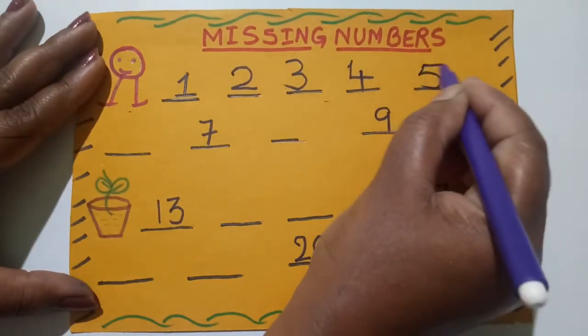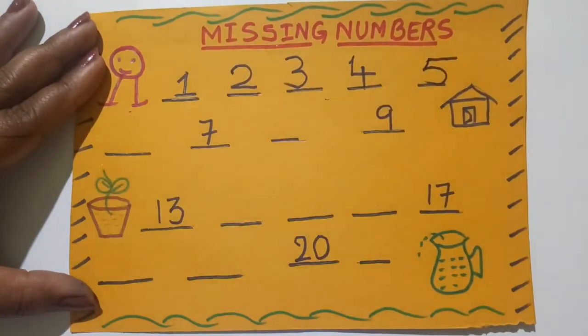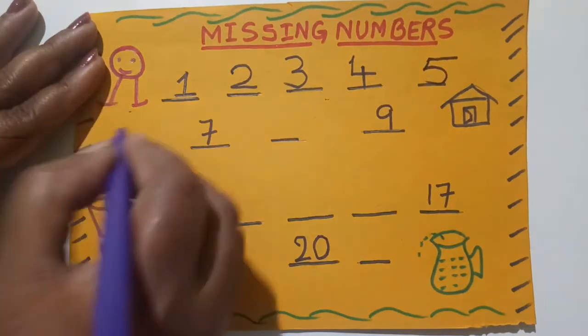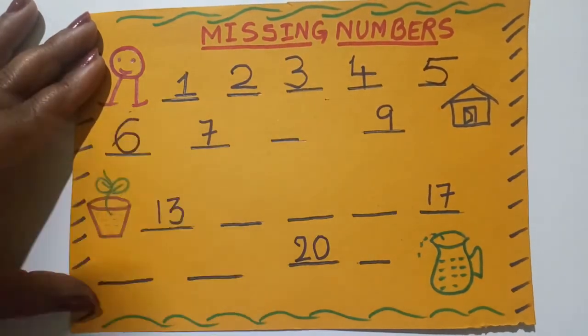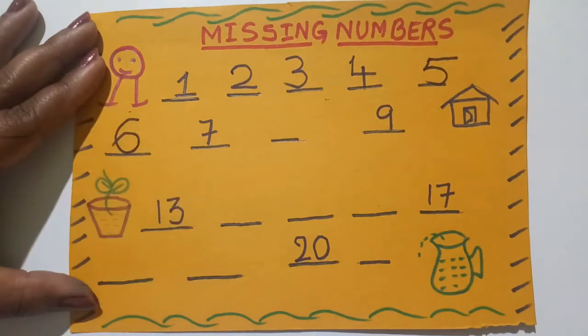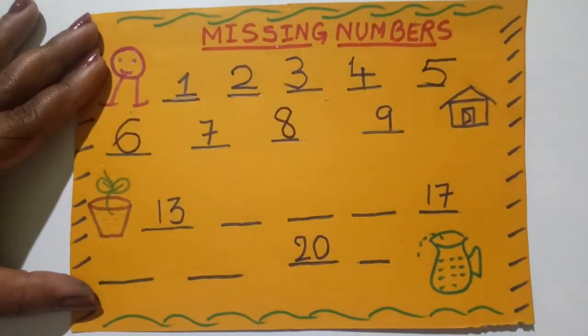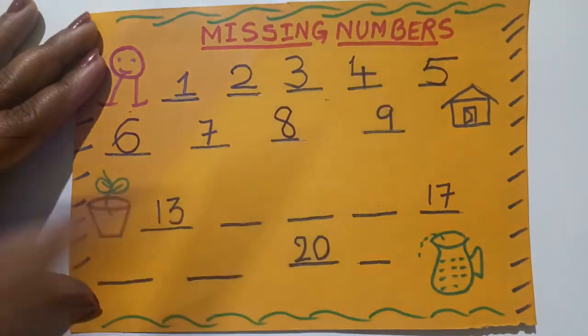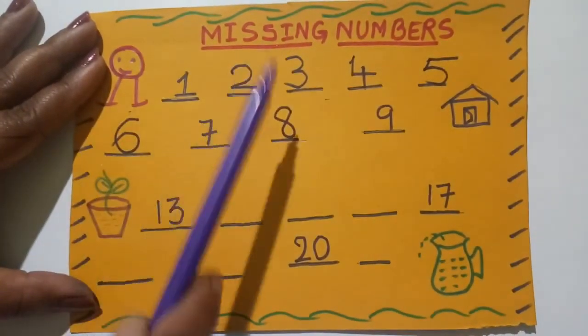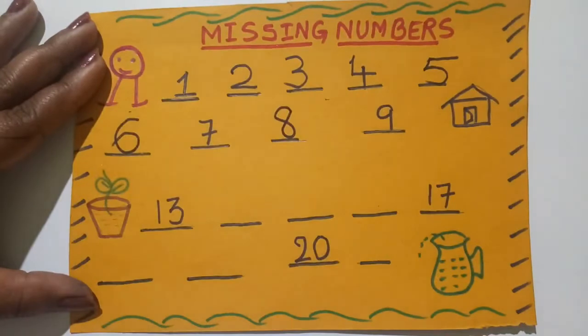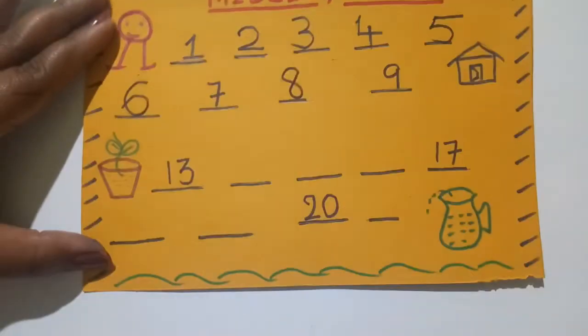It is 5. Many will be knowing which is the next number. That is 6, 7, 8. So, 1, 2, 3, 4, 5, 6, 7, 8, 9. And, got the house. Let us see the next one, children.